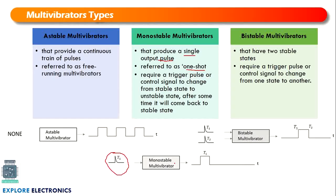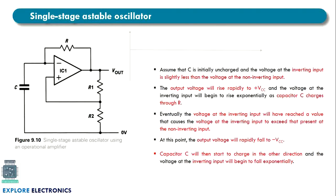The bistable multivibrator has two stable states at its output: 0 and 1. It requires two trigger pulses to create a square pulse. The first trigger pulse takes the output from 0 to 1, and after the second pulse it comes back to 0. Bistable means it attains two stable states with two trigger pulses.